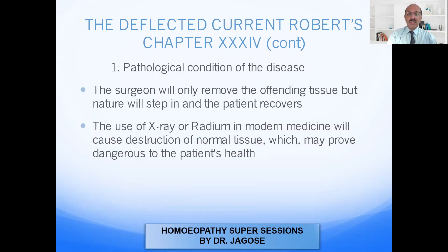The first obstacle is the pathological condition of the disease. Robert says the surgeon will only remove the offending tissue, but nature will step in and the patient recovers — whatever the surgeon finds pathologically abnormal, he will remove that, and then nature will step in ensuring recovery. However, the use of x-ray or radium in modern medicine will cause destruction of normal tissue, which may prove dangerous to the patient's health, as the normal tissue is also destroyed along with the pathological tissue.